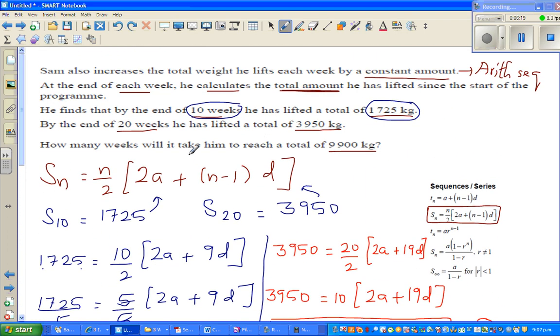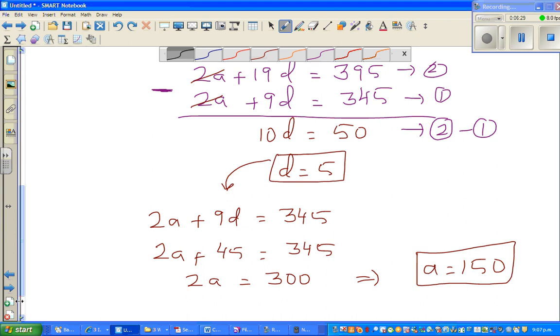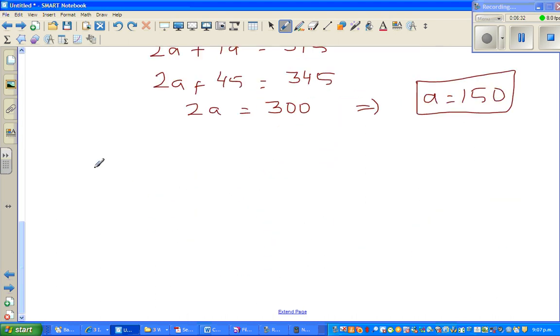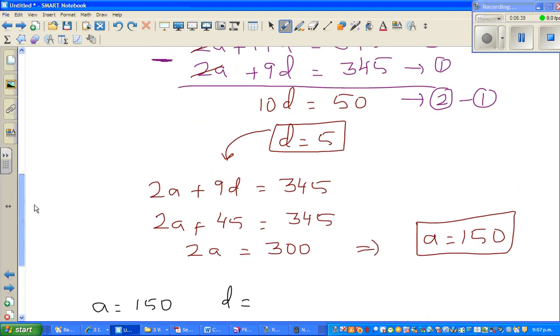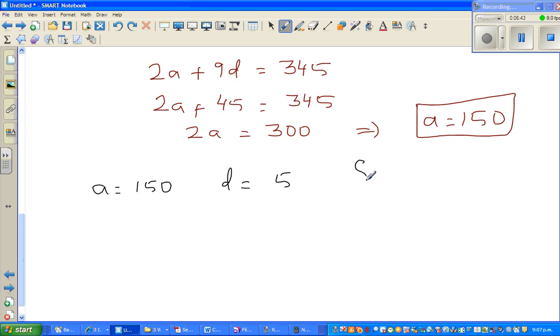Now what's the question? The question is how many weeks does it take for him to reach 9900 kg. So a is 150, d is 5, and the question is when Sn is 9900, what is n? After how many weeks does the total become 9900? Let me write the formula again: Sn is n over 2 times (2a plus (n minus 1) times d).